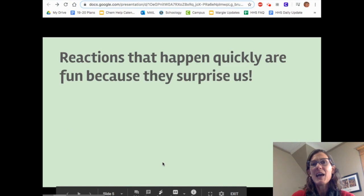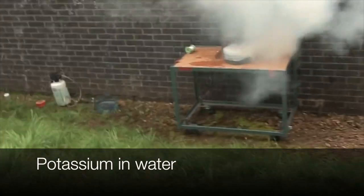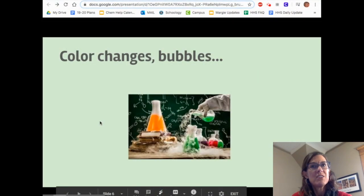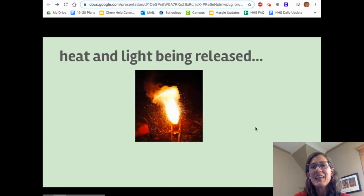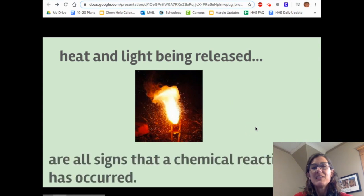Now reactions that happen quickly are fun because they surprise us. When a reaction occurs, there are some signs of it. Color changes might happen. Like here you see some unexpected colors. Bubbles, and heat and light are often released. These are all signs that a chemical reaction has occurred.